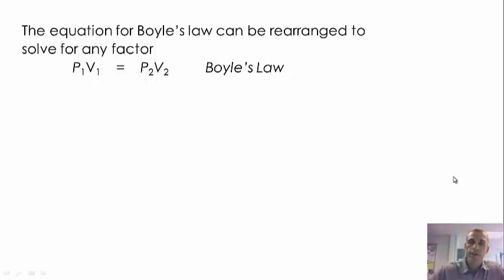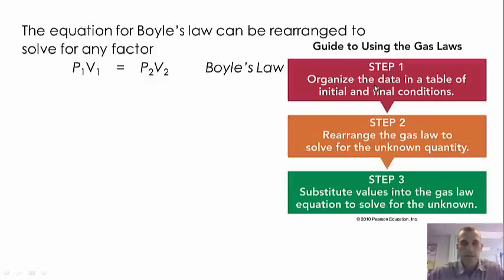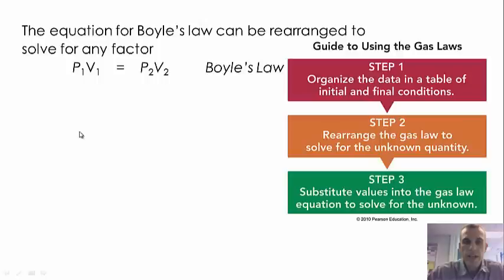The equation for Boyle's Law can be rearranged to solve for any factor. Here are the steps: we have P1V1 equals P2V2. Depending on what you want to solve for, you can rearrange this. Step one: organize the data in a table of initial and final conditions. Step two: rearrange the gas law to solve for whatever unknown quantity you want. For example, if we want P1 by itself, you divide both sides by V1.